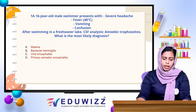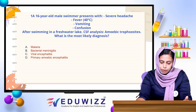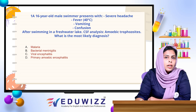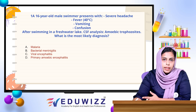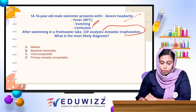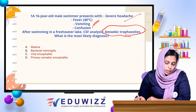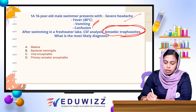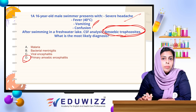First question: a 16-year-old male swimmer presents with severe headache, fever, vomiting, and confusion after swimming in a fresh water lake. CSF analysis shows amoebic trophozoites. What is the most likely diagnosis? Options: A) malaria, B) bacterial meningitis, C) viral encephalitis, D) primary amoebic encephalitis. The answer is D, primary amoebic encephalitis.